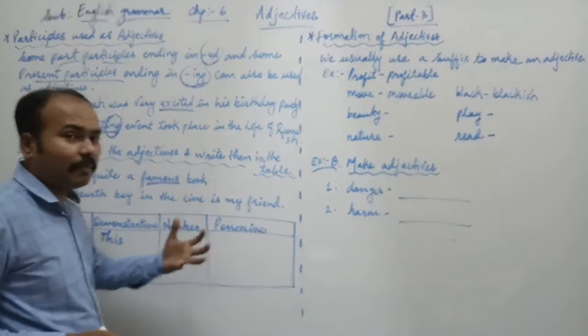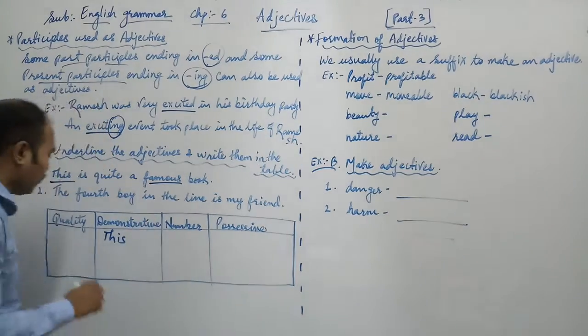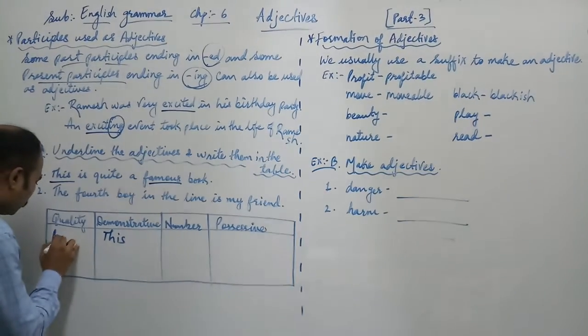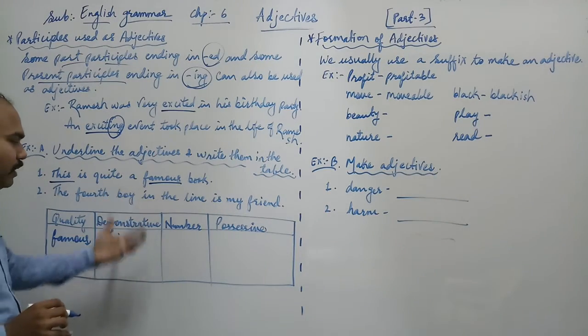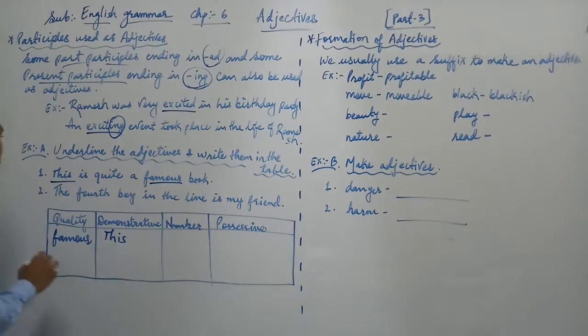Next, famous book. What does it tell about the book? Quality. So you can write down the word famous over here. In this way, you have to underline as well as you have to write in the table. Exercise number B, number 2 question.